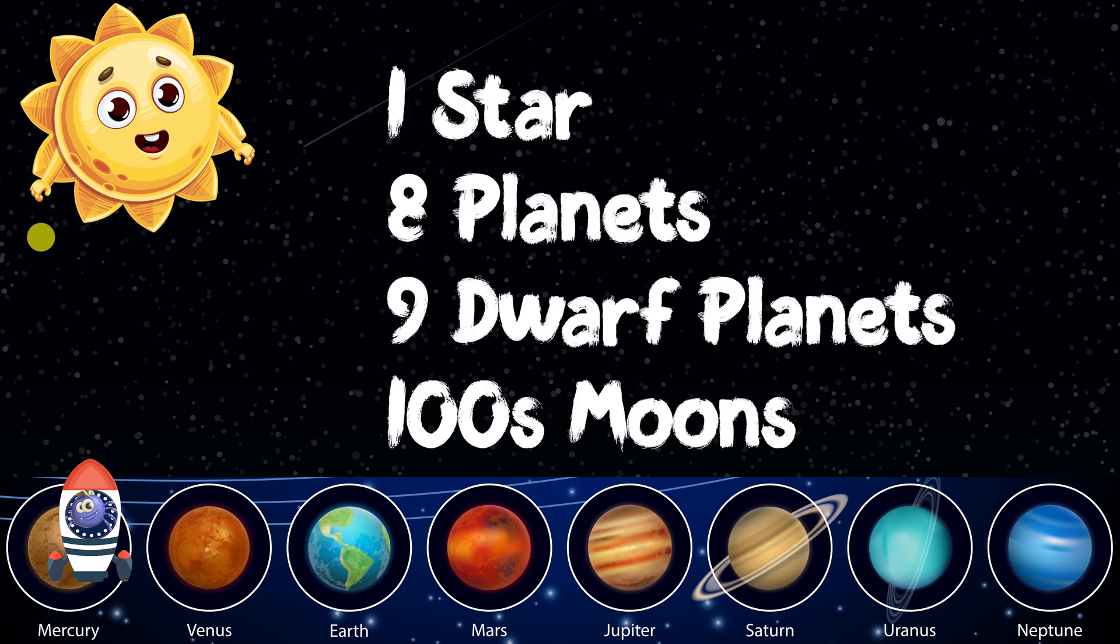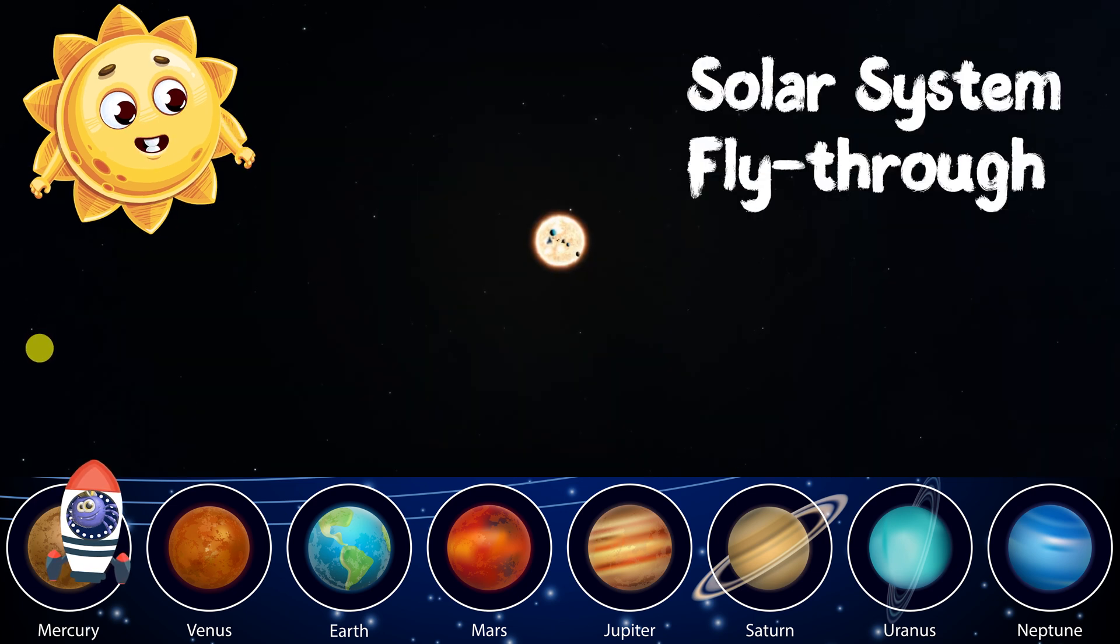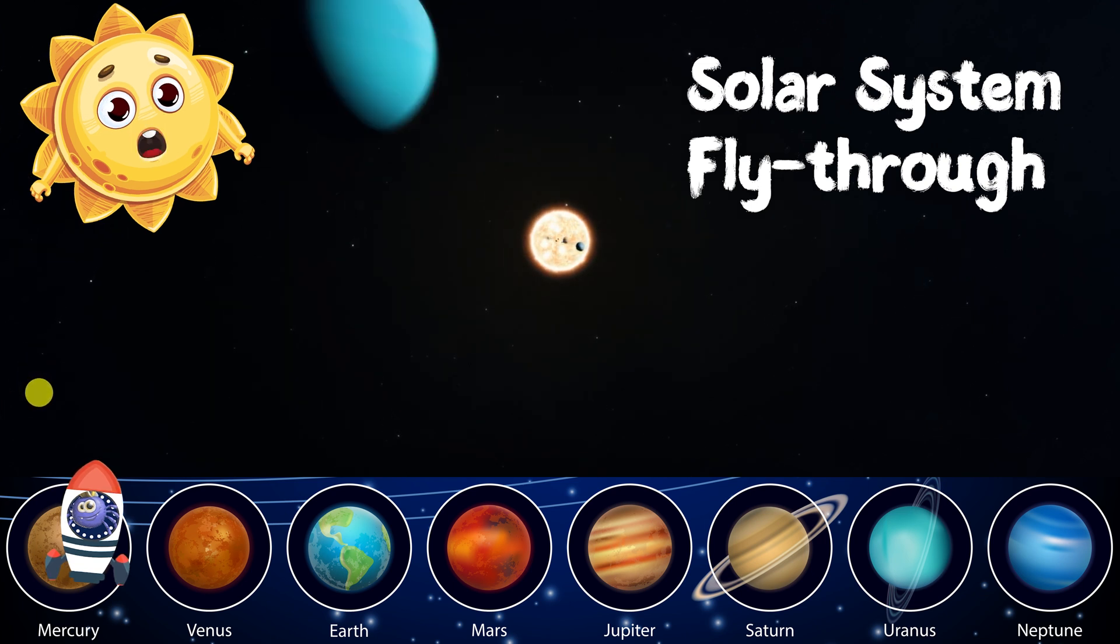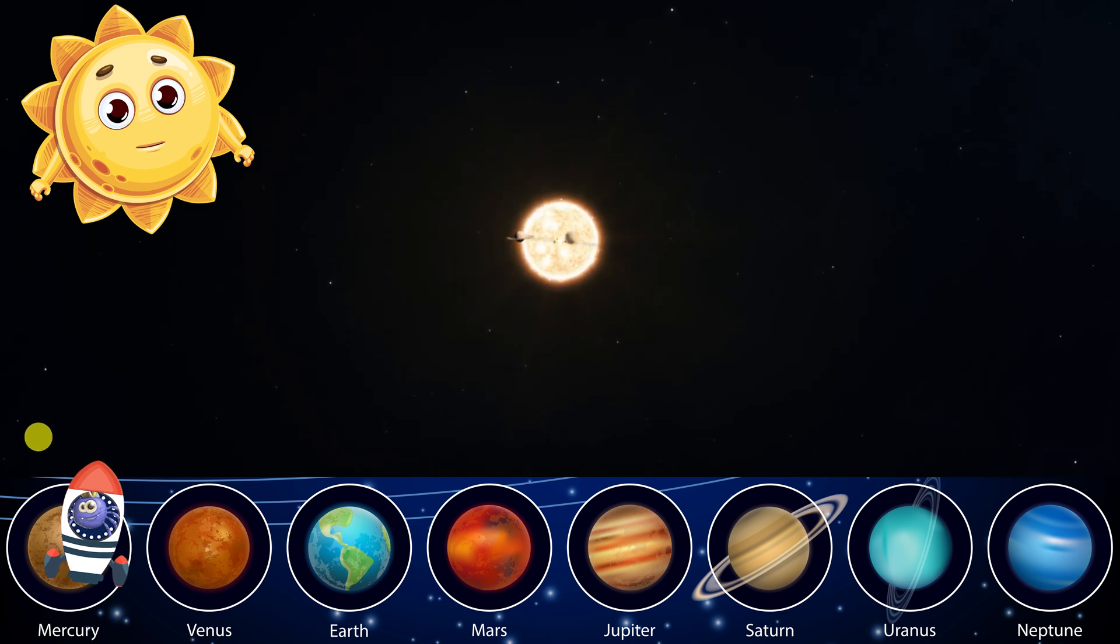I am ready. The solar system is a group of objects that orbit around me, the Sun. These objects include eight planets, nine dwarf planets, and hundreds of moons. The solar system also includes millions of asteroids, comets, and small pieces of rock and ice.